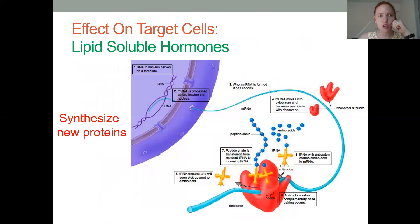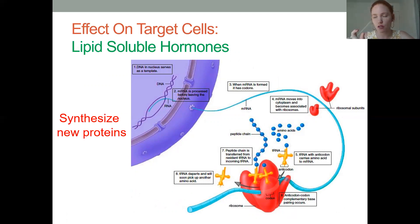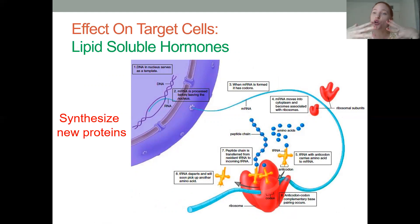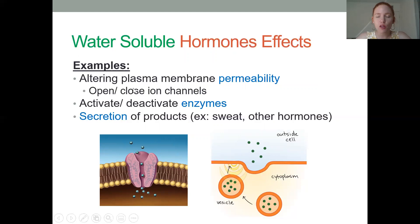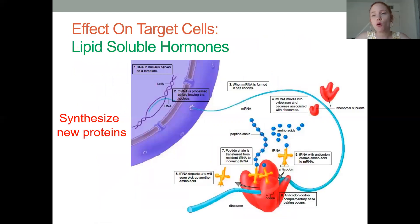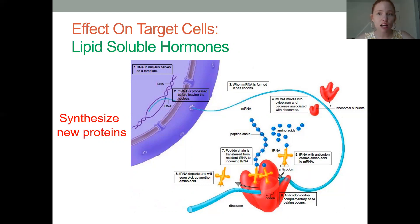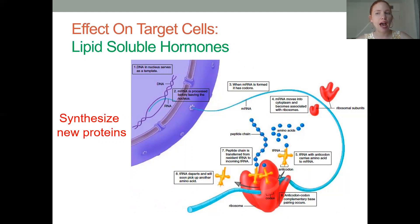Lipid-soluble hormones, once they form the receptor-hormone complex, travel all the way into the nucleus and actually synthesize entirely new proteins. For example, testosterone is a lipid-soluble hormone, and during puberty it has pretty drastic effects on the body because it is able to change gene expression patterns.